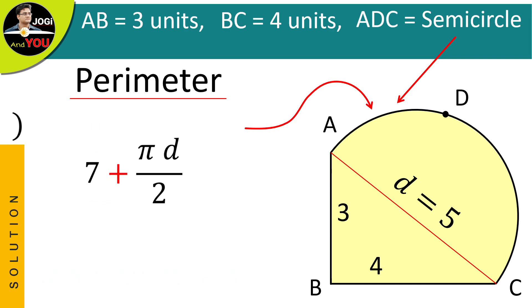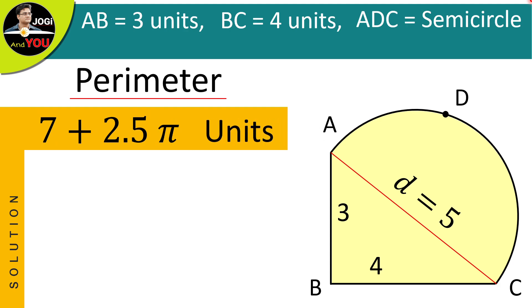Replace the value of D with 5: 7 plus pi times 5 divided by 2 which means 7 plus 2.5 pi units. And if you want its perimeter in exact numerical value, then the value of pi has to be applied. Here, we are using 3.14. After calculating, we get 14.85 units and this will be the required perimeter of the given shape.